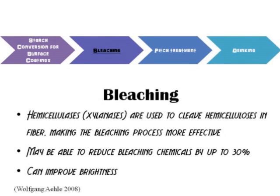The next stage in paper processing is bleaching. The enzyme used in this stage is xylanase. It is used to cleave hemicelluloses in fiber, making the bleaching process more effective and improving brightness. It may be able to reduce bleaching chemicals by up to 30%.